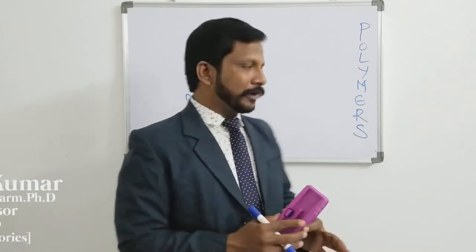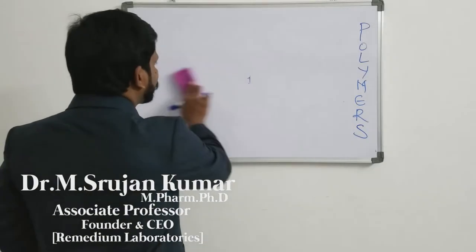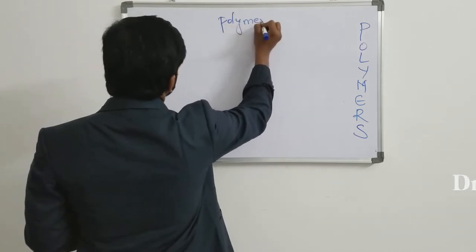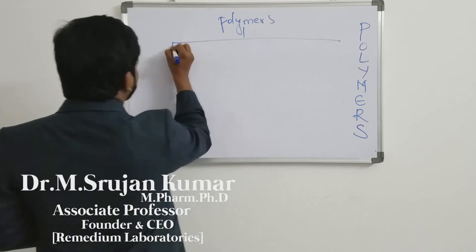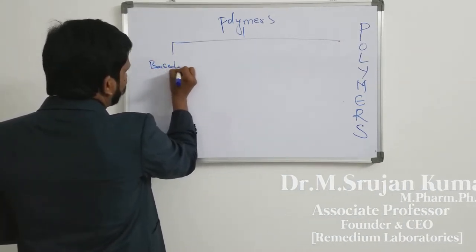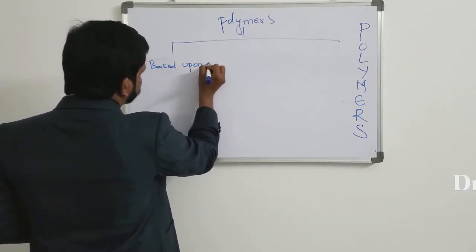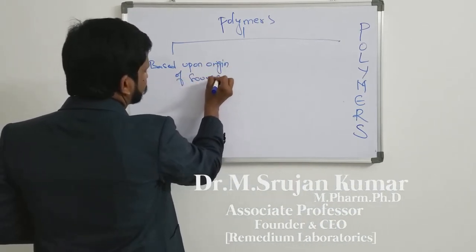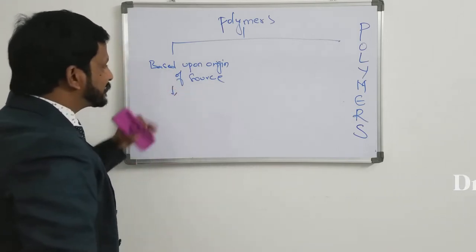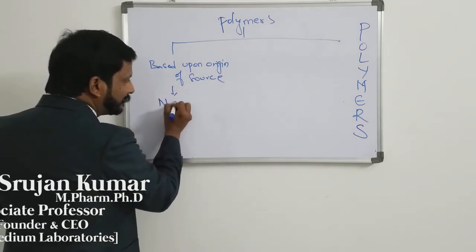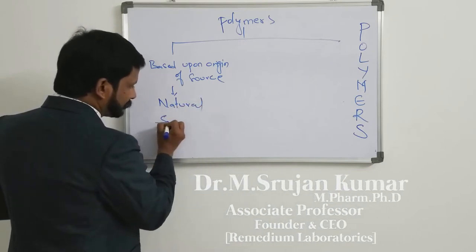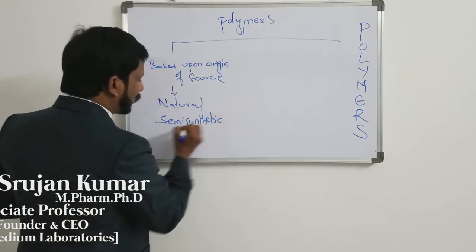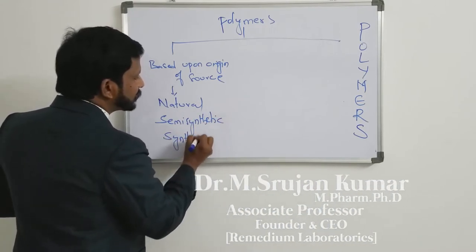Now we move on to the classification of polymers. The polymers are classified into five types. The first one is based upon origin of source. Based upon the origin of source, it is classified into three types again: natural, semi-synthetic, and synthetic.